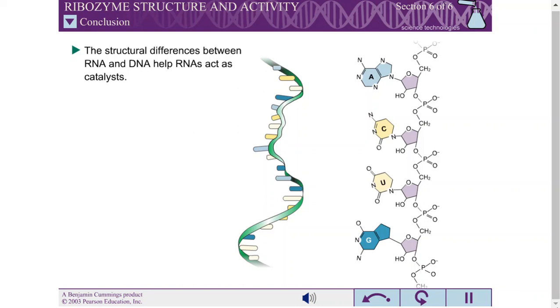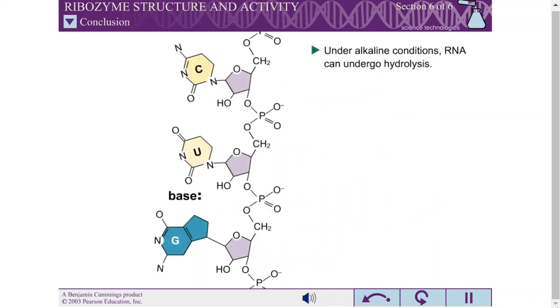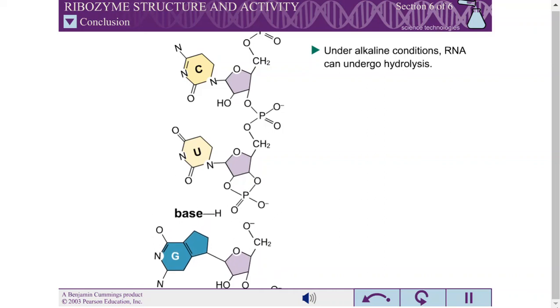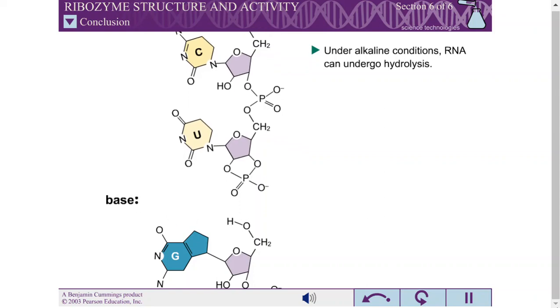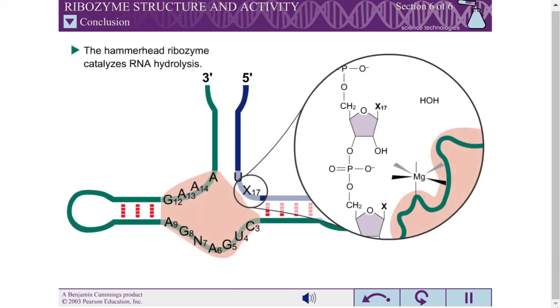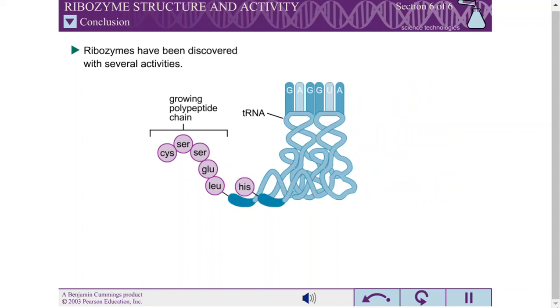The structure of RNA differs from that of DNA in three key respects. RNA is usually single-stranded, RNA contains uracil instead of thymine, and RNA contains ribose instead of 2' deoxyribose. These differences help RNAs to act as catalysts. Under alkaline conditions, the 2' hydroxyl of a ribose in the RNA backbone can become deprotonated, leading to the hydrolysis of the RNA chain. The hammerhead ribozyme catalyzes the hydrolysis of RNA in a mechanism similar to that of alkaline hydrolysis.